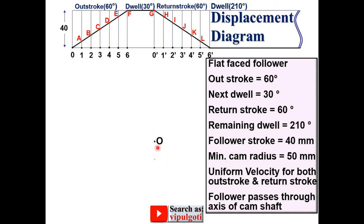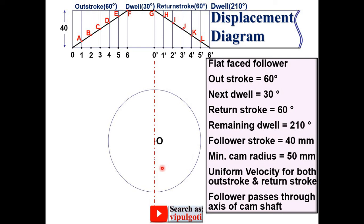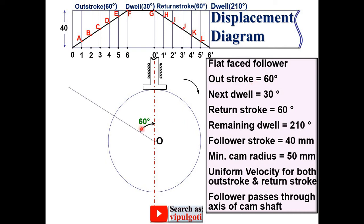Now for the cam profile: take any point and label it O. Draw a vertical line through O as the center line. Draw a circle with the compass using the minimum cam radius of 50 mm. Draw the symbol of the flat face follower. Since the direction of cam rotation is not given, assume it is clockwise, so you take angles in the anticlockwise direction from the reference axis — opposite to cam rotation. Mark 60 degrees for outstroke, then 30 degrees for dwell, then 60 degrees for return stroke, and the remaining 210 degrees for the remaining dwell.